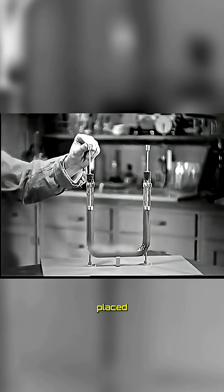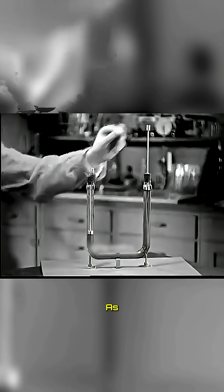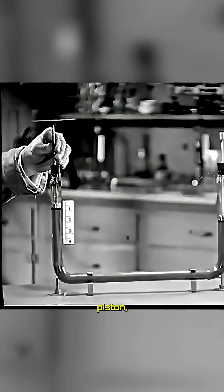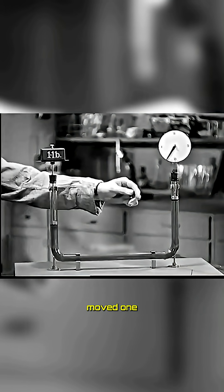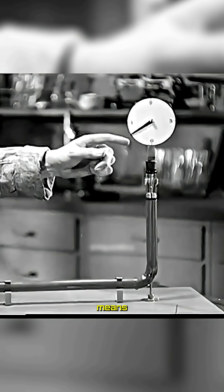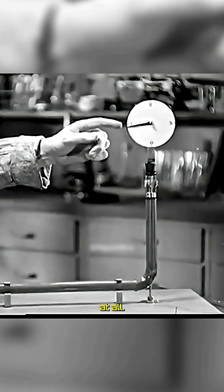They filled a pipe with liquid and placed pistons at both ends. As soon as pressure was applied to the first piston, it moved one inch down and the piston on the other side moved one inch up with the same force. That means there was no loss of power at all.